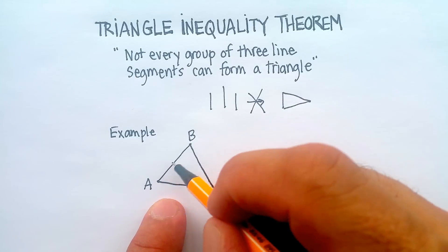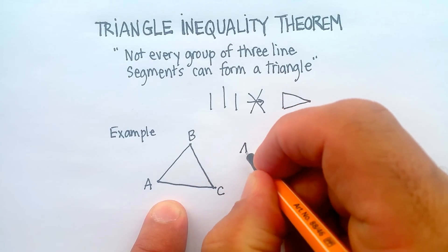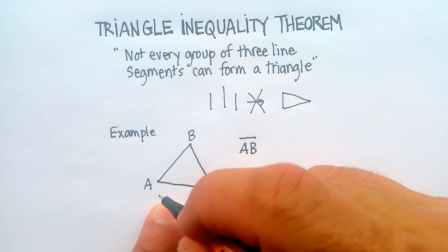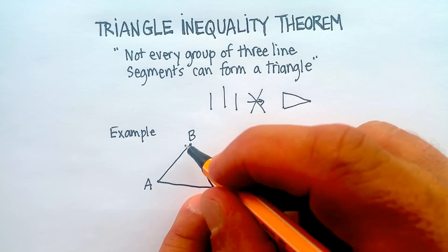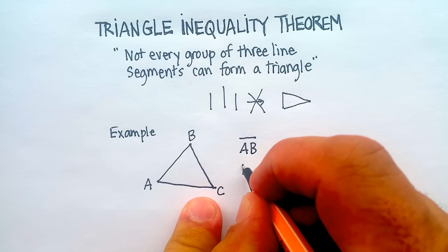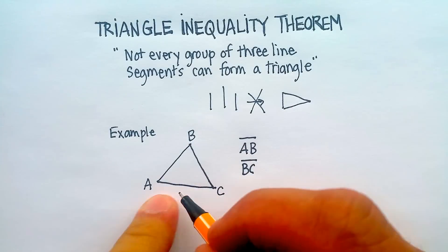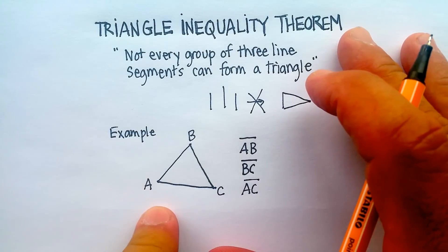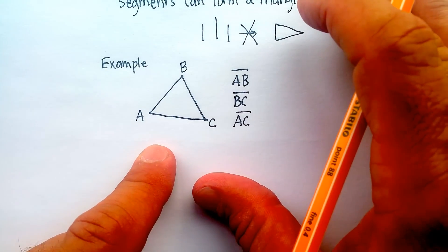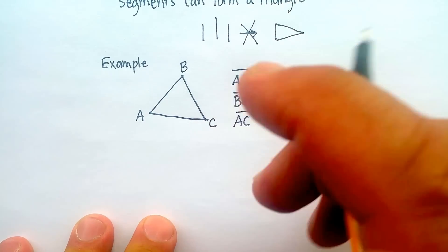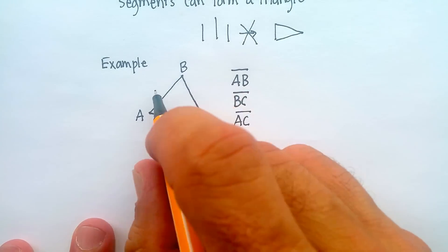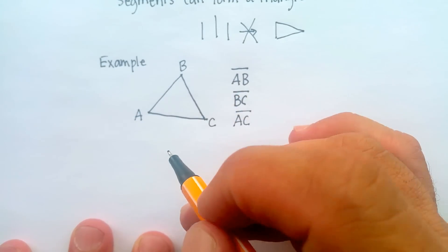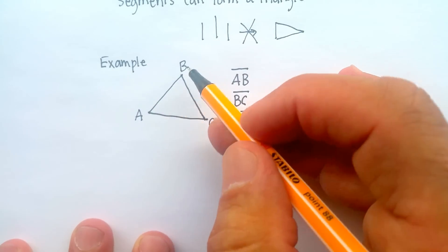We know that this line segment between A and B — and this is how you do a line segment: no arrows, just a line segment. This line segment here is BC, and this line segment is AC. Now, I want to show you what the relationship is, and the relationship is this: if you add the sum of any two segments, it has to be greater than the length of the third side.